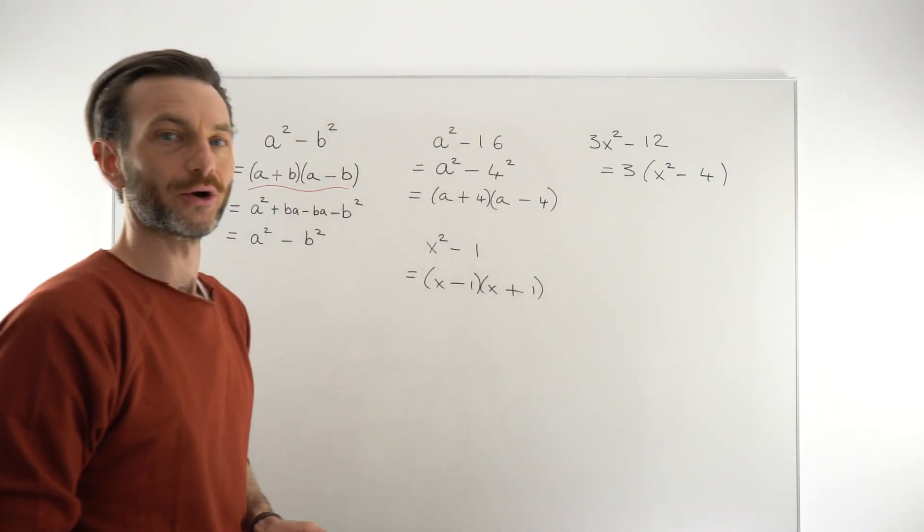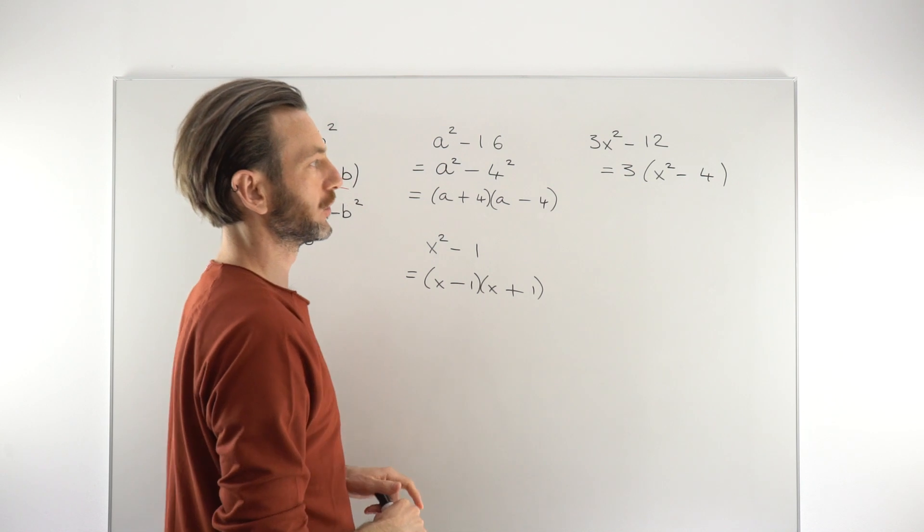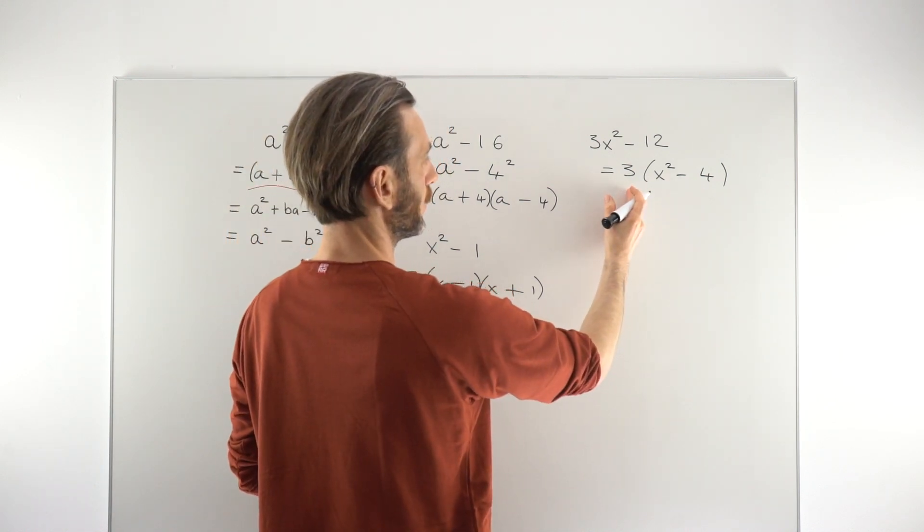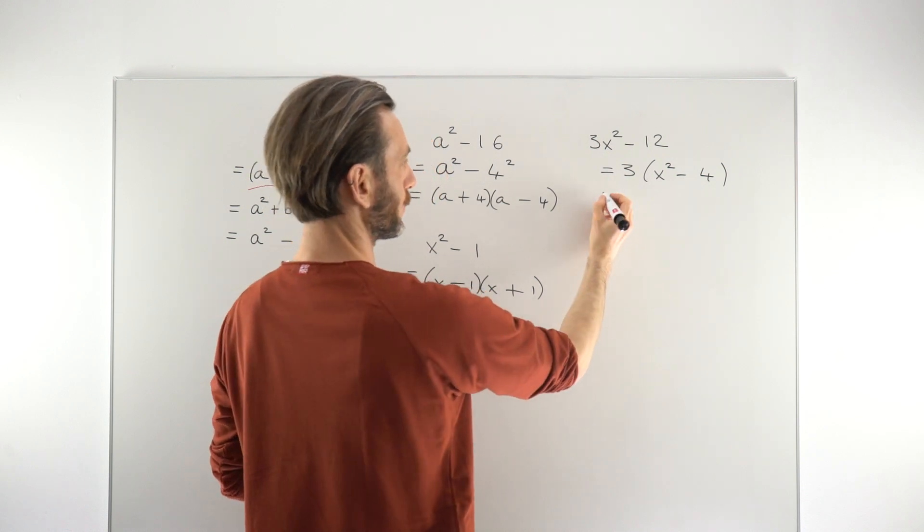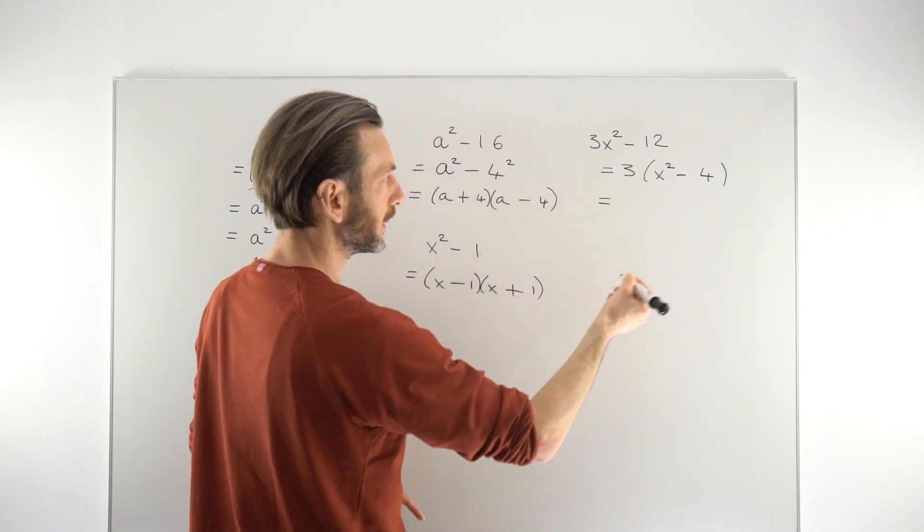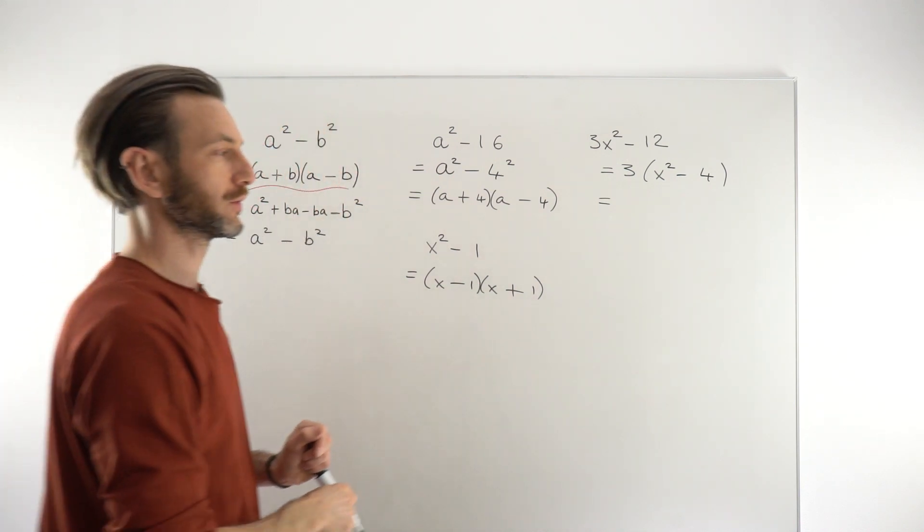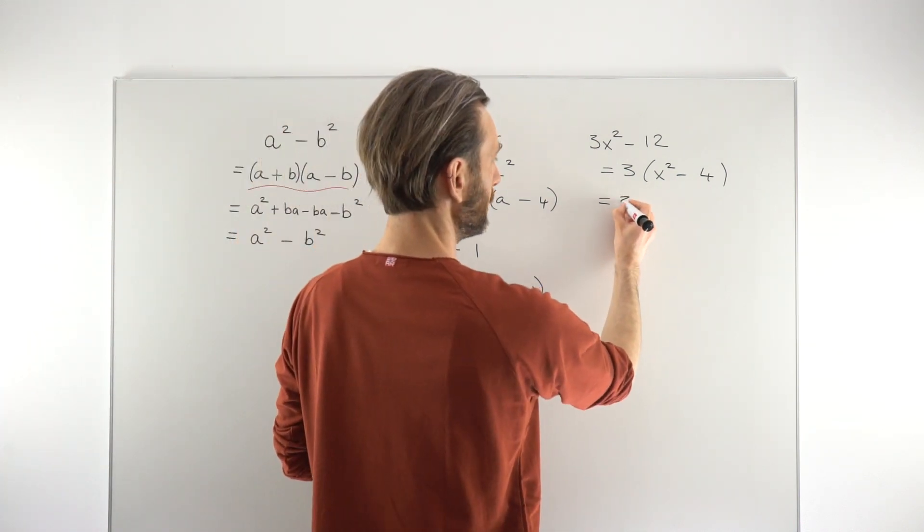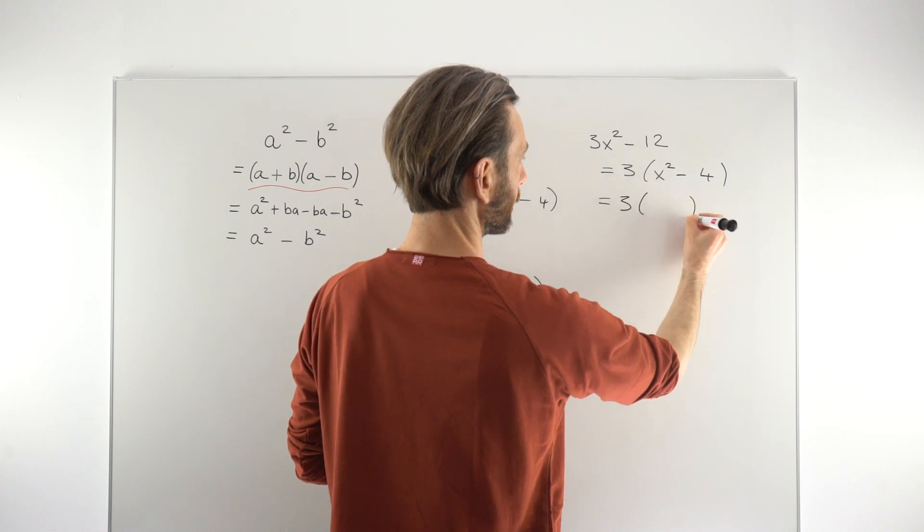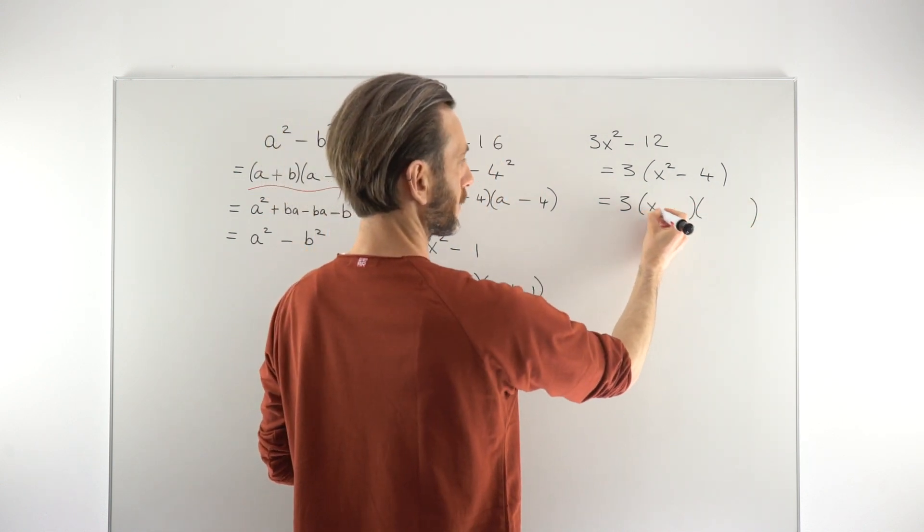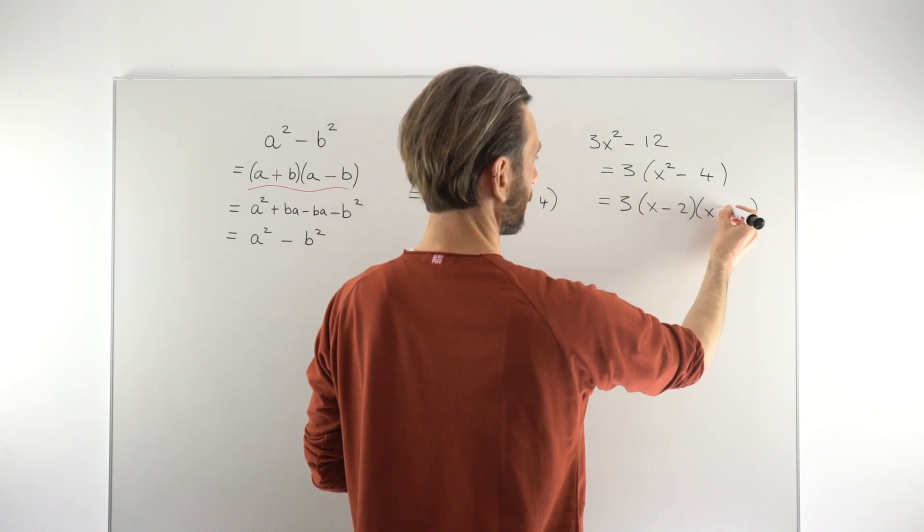We pull out the common factor of 3 and then we've got a difference of squares inside the bracket. So this is a very common scenario actually. So it's good for you to practice some of these and to see a few. We've not even done the difference of squares yet. Without doing that first factorization, we would never even realize there's a difference of squares there. So we keep the 3.